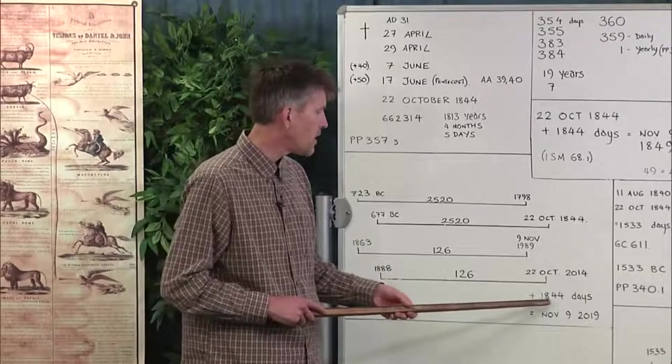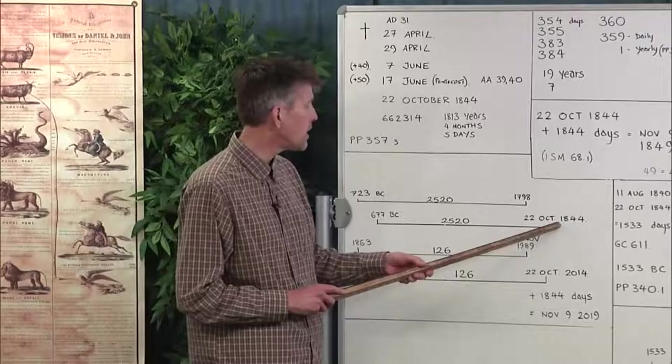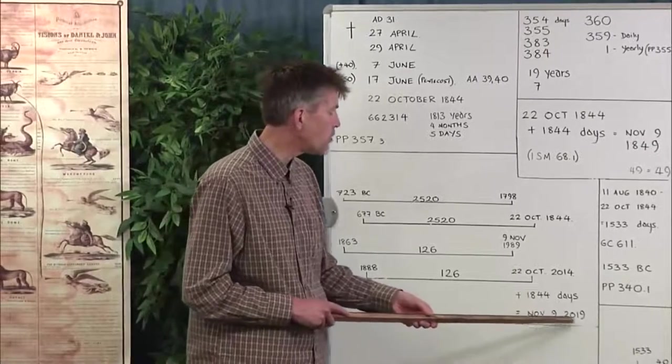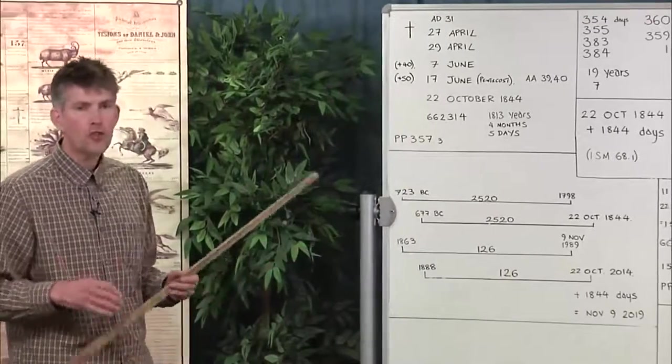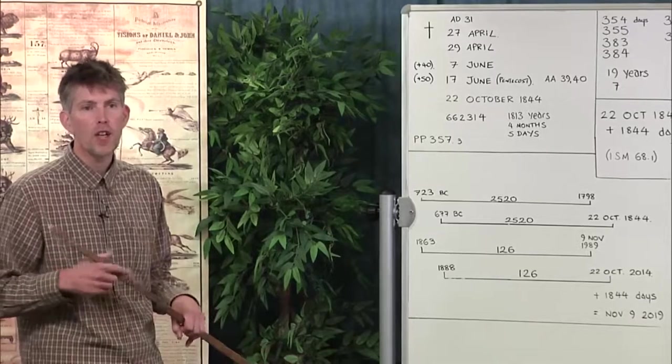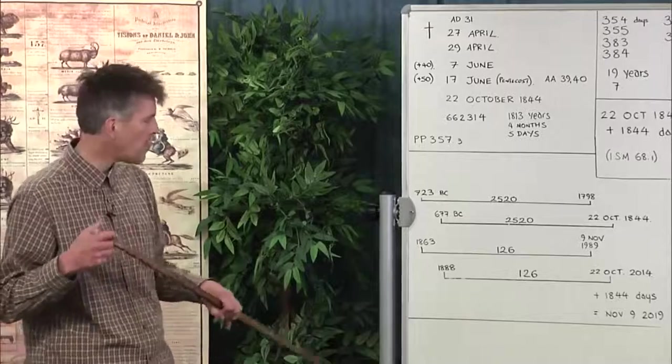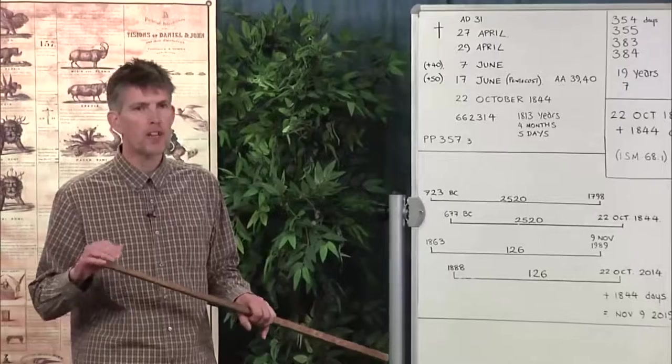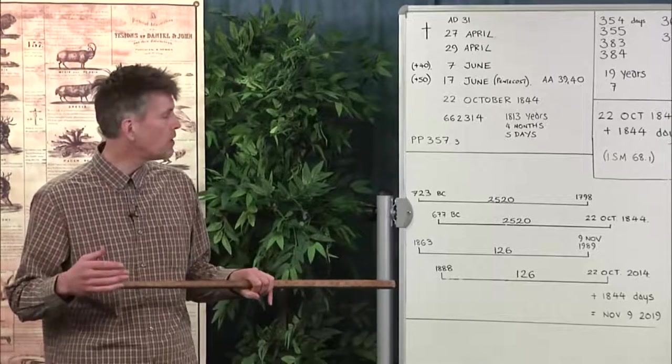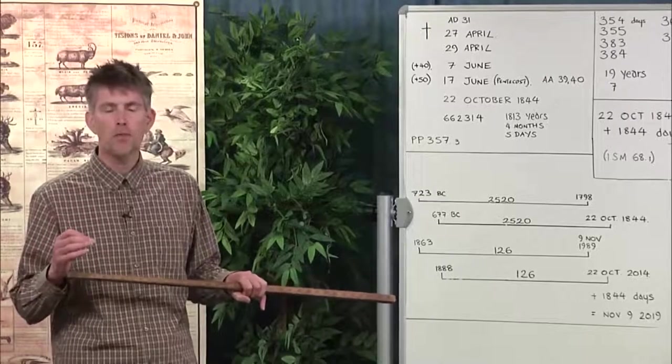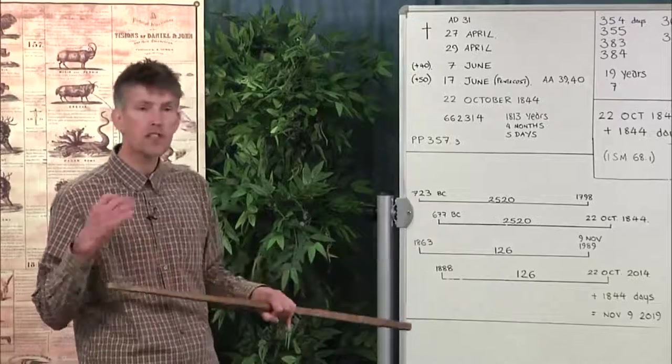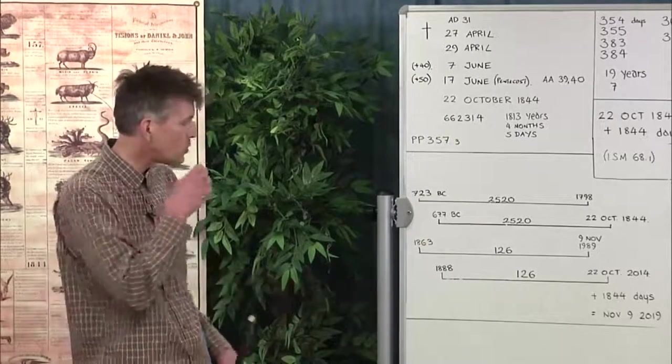We understand these two 2520s in the Bible that Hiram Edson identified. From 723 BC there's a 2520 that ends in 1798. Then from 677 BC, when Manasseh was taken captive by Assyria into Babylon, there's another 2520 years that extend to the 22nd of October 1844. In this movement we understand these two 2520s are paralleled in our history by the number 126. From when the Seventh-day Adventist Church was formed in 1863, we have 126 years that takes us to 1989, specifically the 9th of November, when the Berlin Wall fell down. Then from 1888 we have another 126 years that takes us to 2014, the 22nd of October.